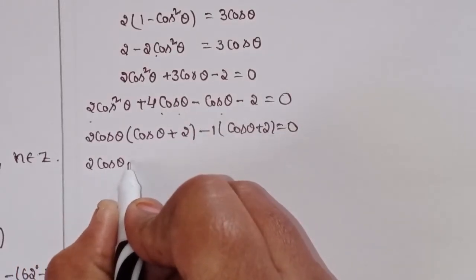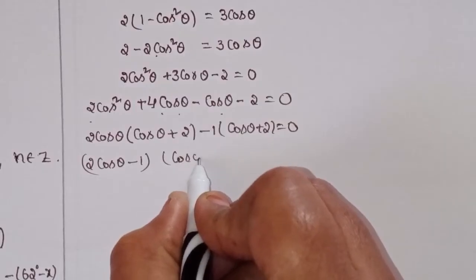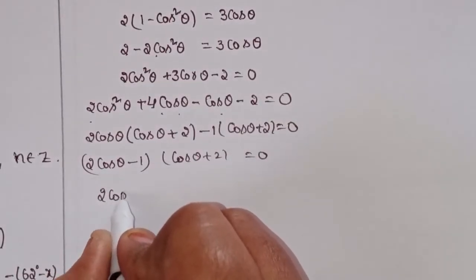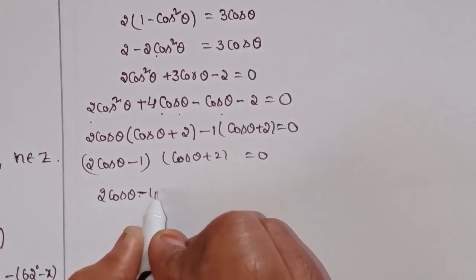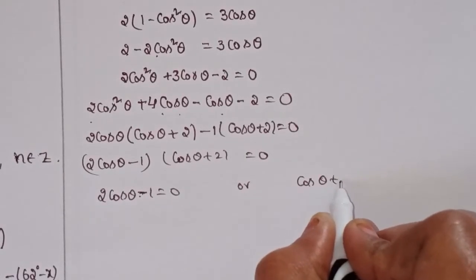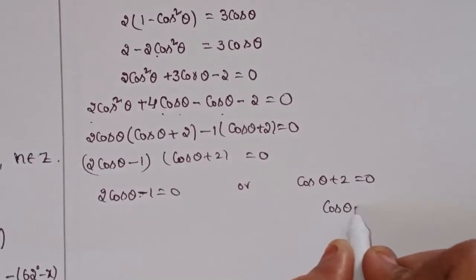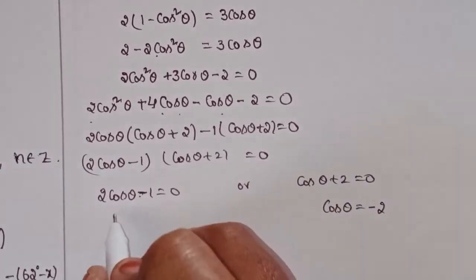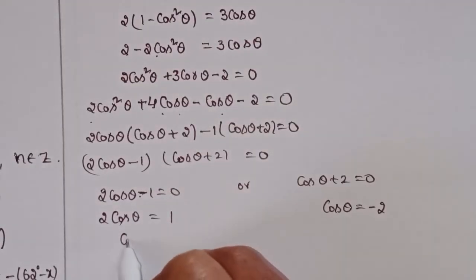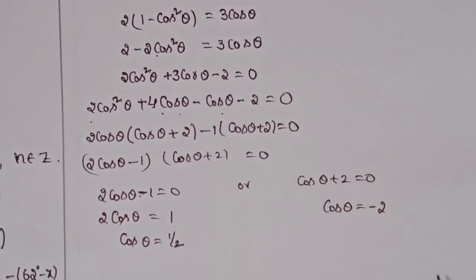So (cos theta plus 2)(2 cos theta minus 1) equal to 0. From cos theta plus 2 = 0, cos theta = minus 2. From 2 cos theta minus 1 = 0, cos theta = 1/2.